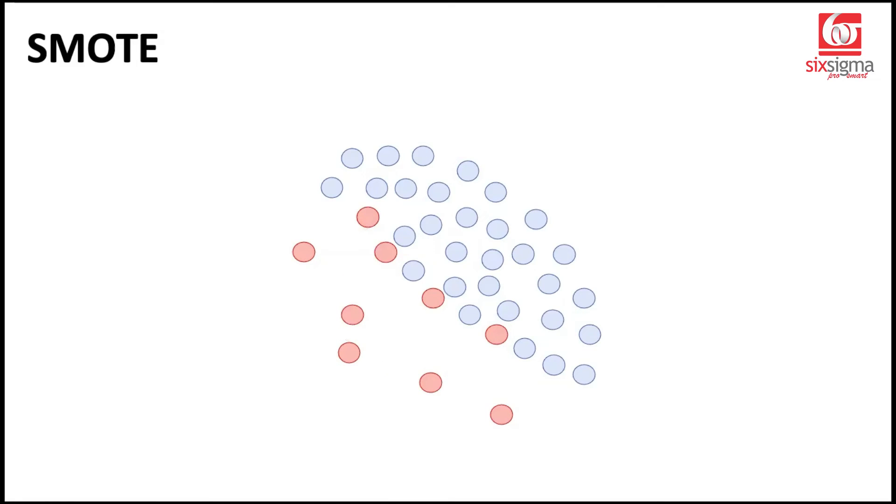So you can imagine where we started, we had much lesser representation of the red class, but where we are now, we have a lot better representation of the red class. That's the power of SMOTE.